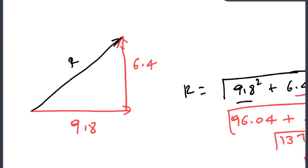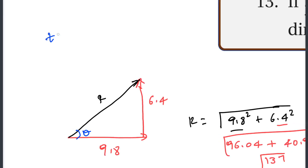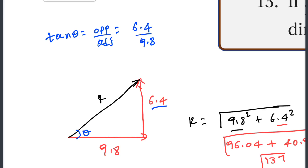The direction is theta. Tan theta equals opposite over adjacent. The opposite side is 7 and the adjacent is 0. Tan theta equals 7/0. Using the calculator, theta is calculated — approximately 90 degrees.